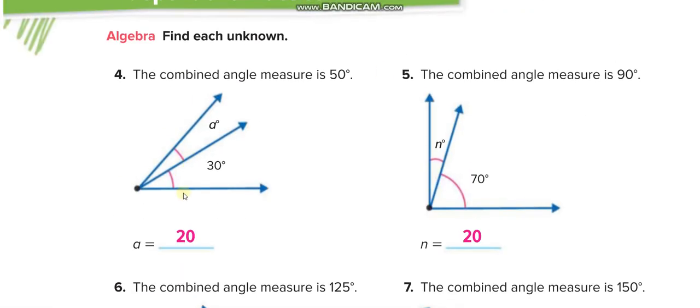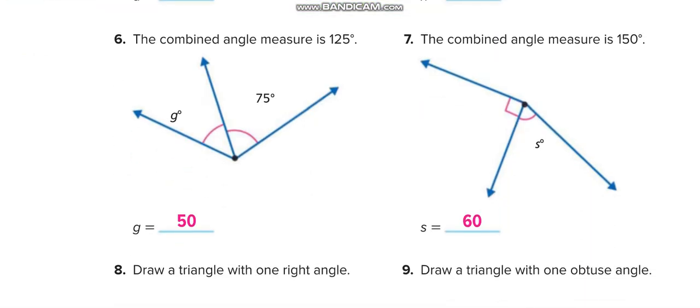The same thing again here. They told you the total angle from the first ray to the last one is 50, and the middle one is 30. So how much is this one? So you will minus this 30 from the total, which is 50. 50 minus 30, 20. The straight line showing 90 degrees. 90 minus 70, that is 20. Here the total combined angle 125 minus 75, that is 50.